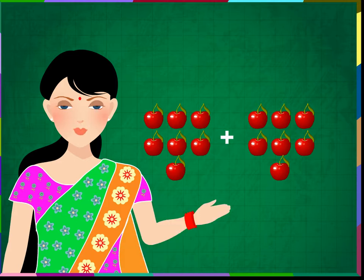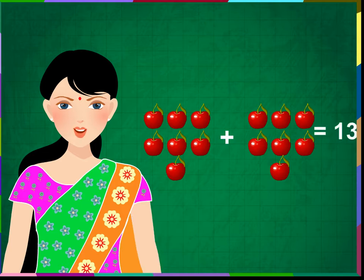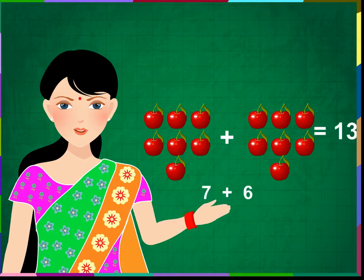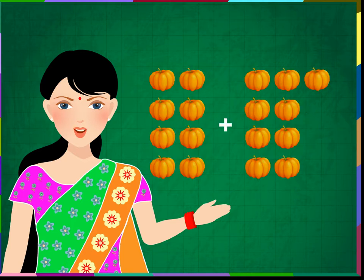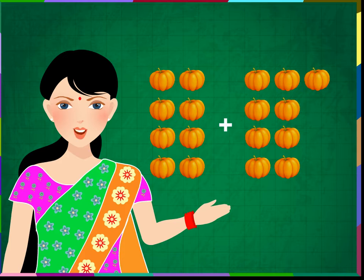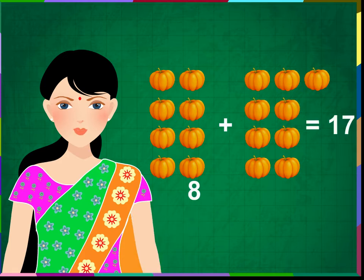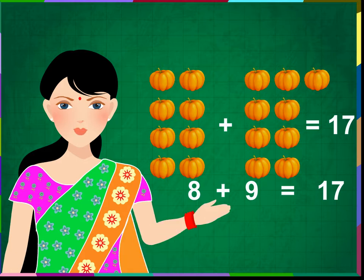Seven cherries and six cherries make 13 cherries. Seven plus six is equal to 13. Eight pumpkins and nine pumpkins make 17 pumpkins. Eight plus nine is equal to 17.